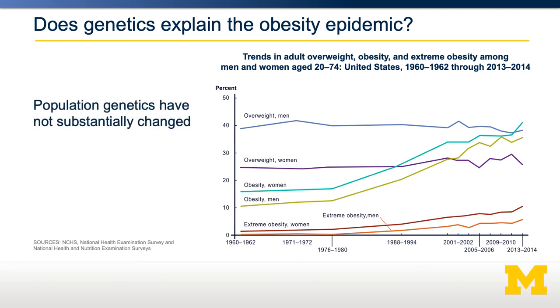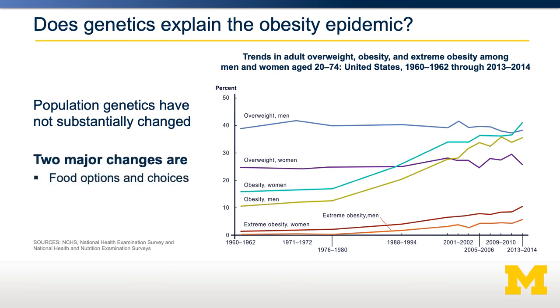However, the rise in obesity cannot be explained exclusively by genetics, because from 1970 to now population genetics have not changed — the number of alleles is similar over this time. The two main changes are in our food environment and our physical activity.